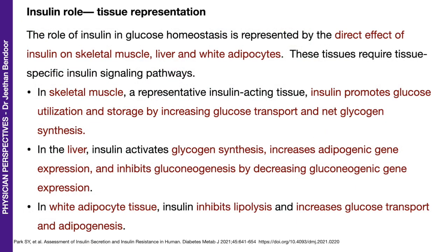Three important characters, as I mentioned earlier: skeletal muscle, liver, and adipocytes. So the role of insulin in glucose homeostasis is represented by the direct effect of insulin on these three characters — skeletal muscle, liver, and adipocytes. These tissues naturally require insulin-specific signaling pathways.